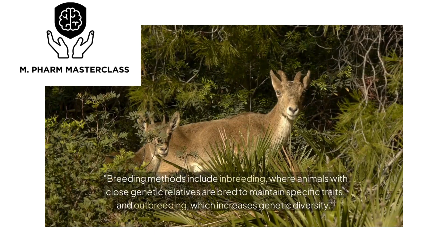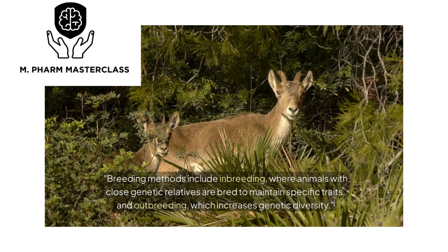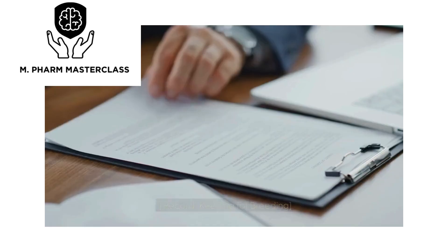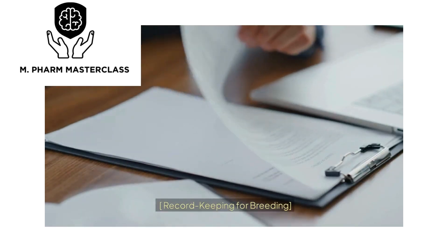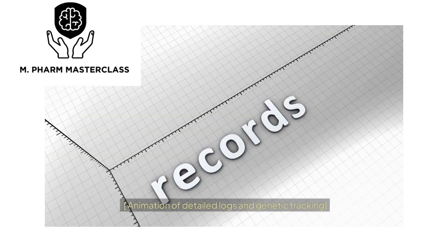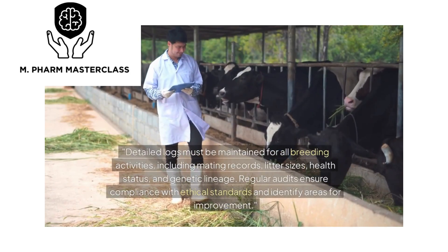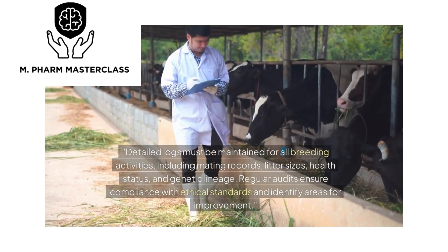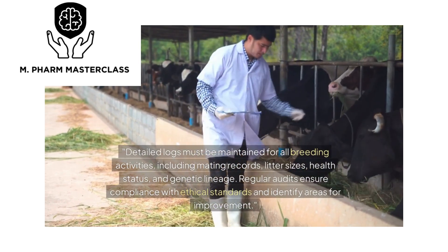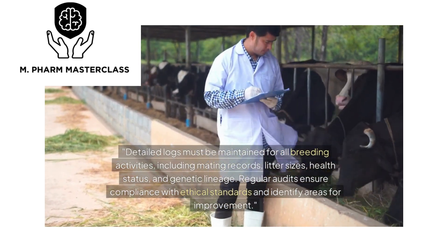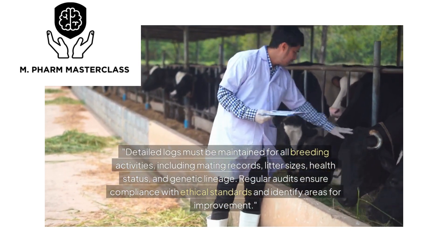Breeding methods include inbreeding, where animals with close genetic relatives are bred to maintain specific traits, and outbreeding, which increases genetic diversity. Detailed records must be maintained for all breeding activities, including mating records, litter sizes, health status, and genetic lineage.